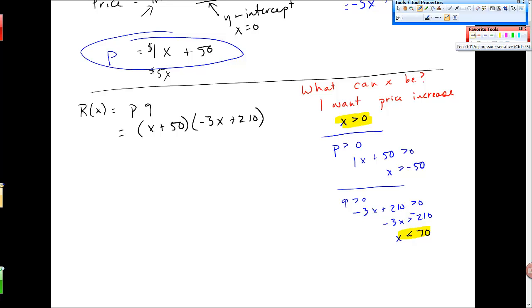Okay, so those kind of set, kind of, I would call them reality boundaries on the model, where the model is probably useful. So if I want to maximize revenue, we'll think about these 70 and zero when we come back. Then I take the derivative, and I'll use the product rule. So I get x plus 50 times negative 3 plus 1 times negative 3x plus 210. So I get negative 3x minus 150 minus 3x plus 210 plus 60, I think.